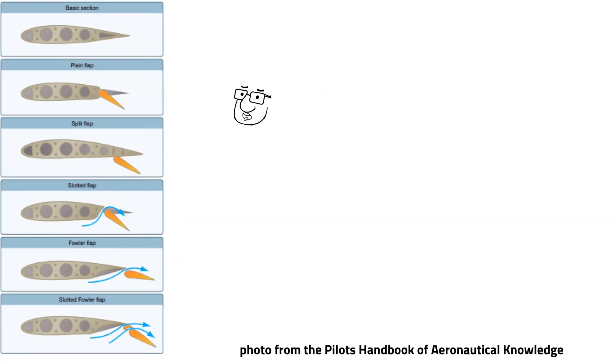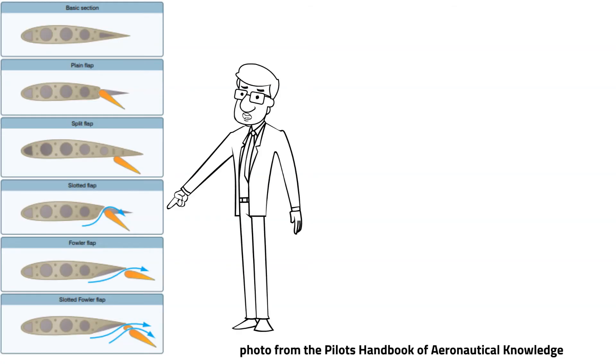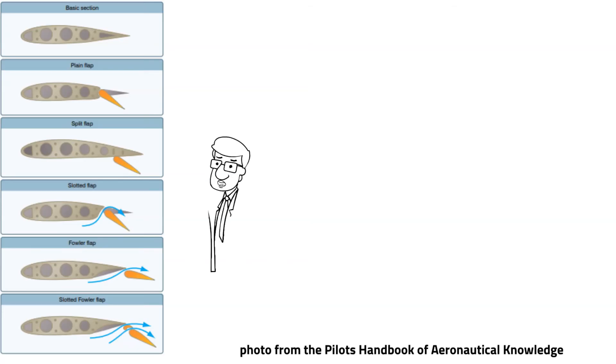The slotted flap is next. It's probably the most common flap used today. A fowler flap is a type of slotted flap. This type of flap is designed to increase the surface area of our wing.